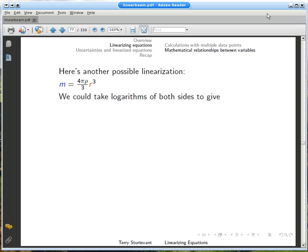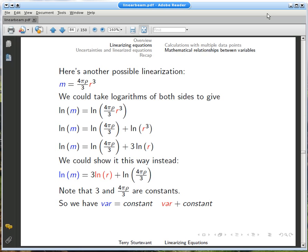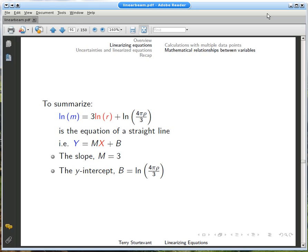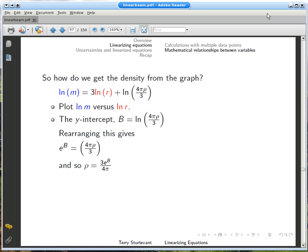Another option comes from taking logarithms of both sides of the equation following a similar procedure. In this case, the slope should equal a constant, 3, and the density is incorporated into the y-intercept. Taking the exponential of the y-intercept and then rearranging gives the density. Again, mass and radius are no longer visible in the calculation of the density. Only the y-intercept matters.